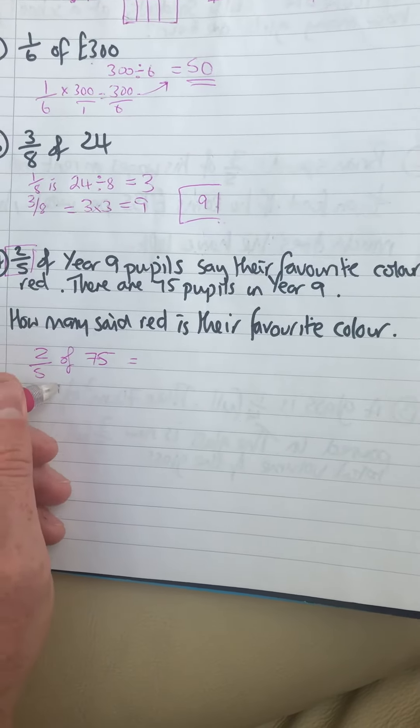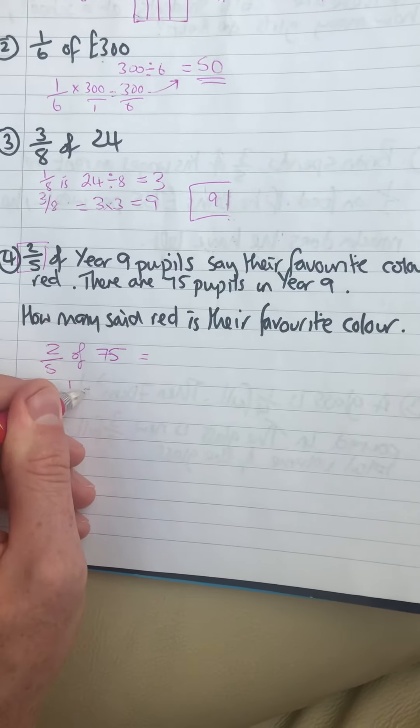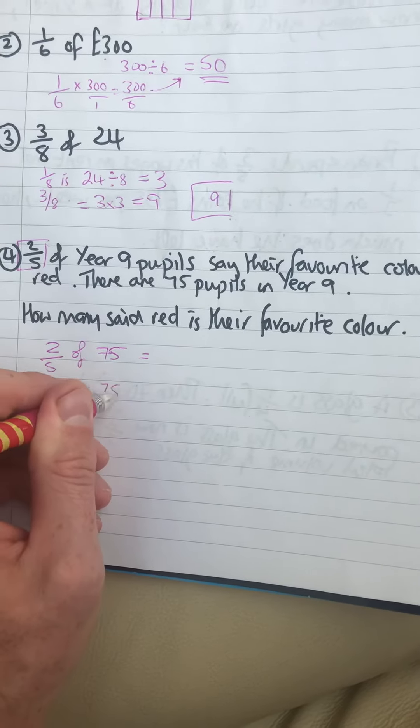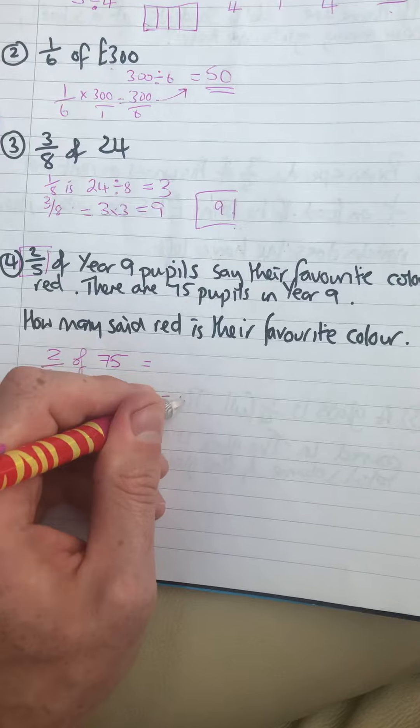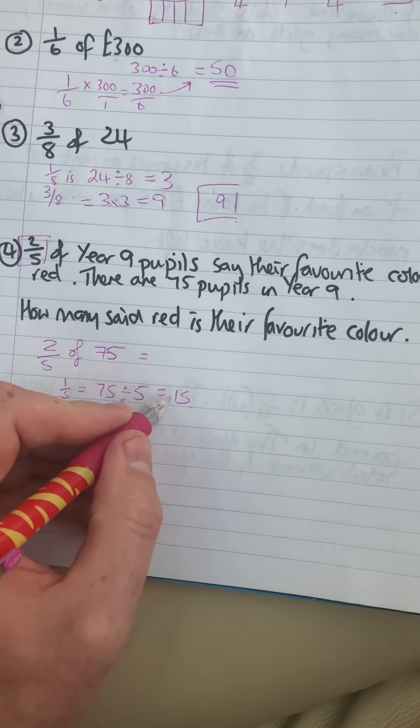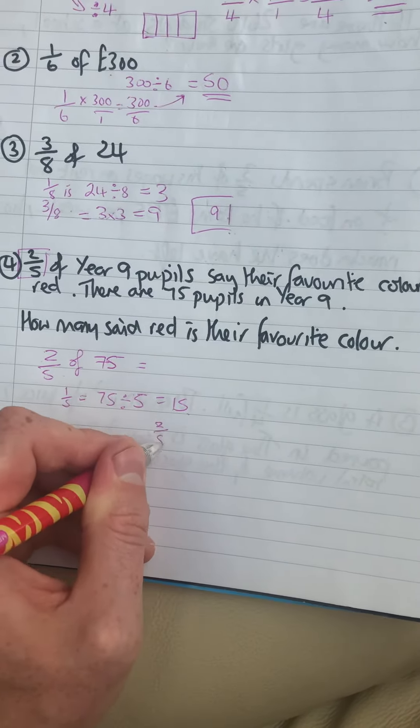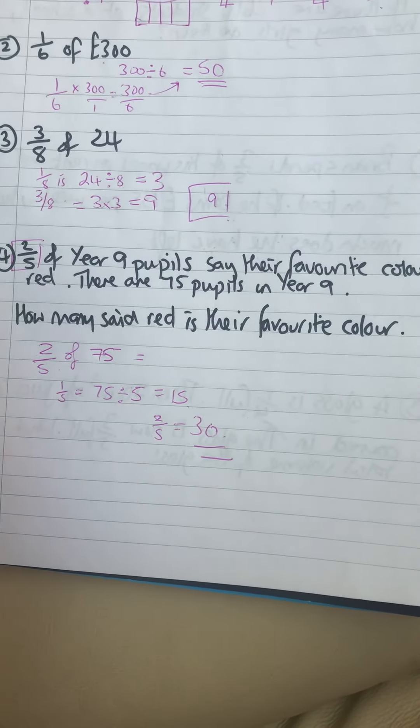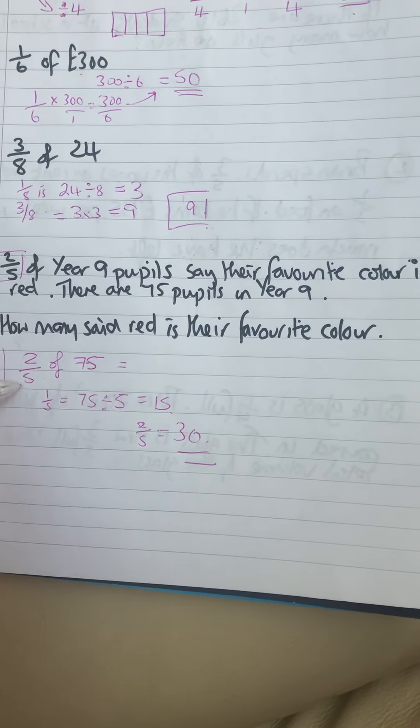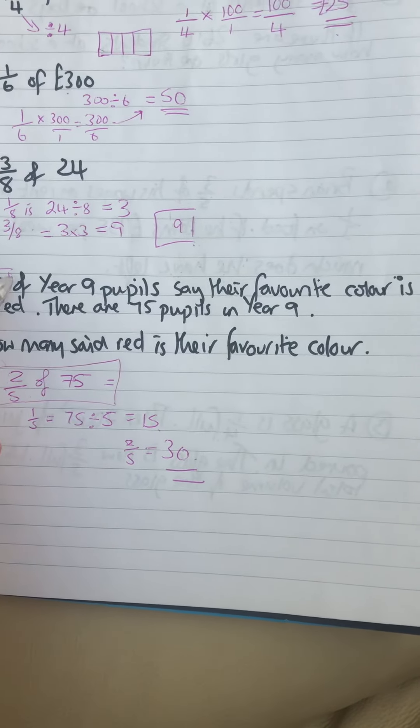So to find a fifth we would divide 75 by five. Well that's 15. So therefore two fifths is double that. That will be 30. Really easy question once you write down what it's actually asking you to do without all these words.